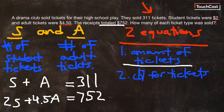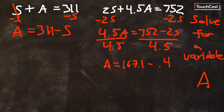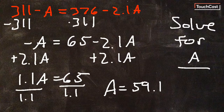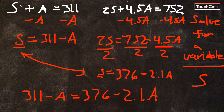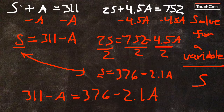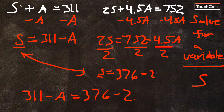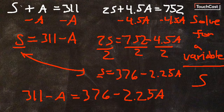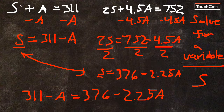Now we've got to do something with these two equations. I set them next to each other, and now we have to solve. There's a slight mistake to fix: 4.5 divided by 2 is not 2.1, it's 2.25. So let's fix that — it becomes 2.25A. Now we can continue on. They're equal to each other, so let's move on to solving them.